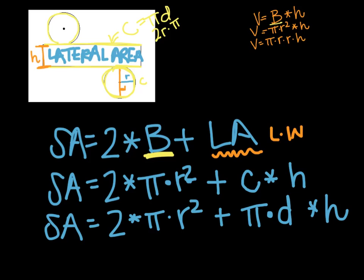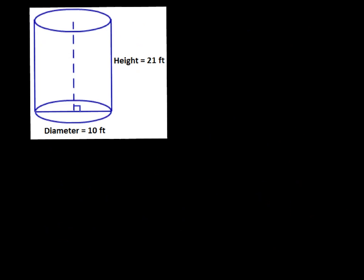Note that pi times diameter can also be written in terms of radius, as pi times 2r, which gives you the diameter because you multiply by 2. So you could write it that way as well — just something to be aware of.